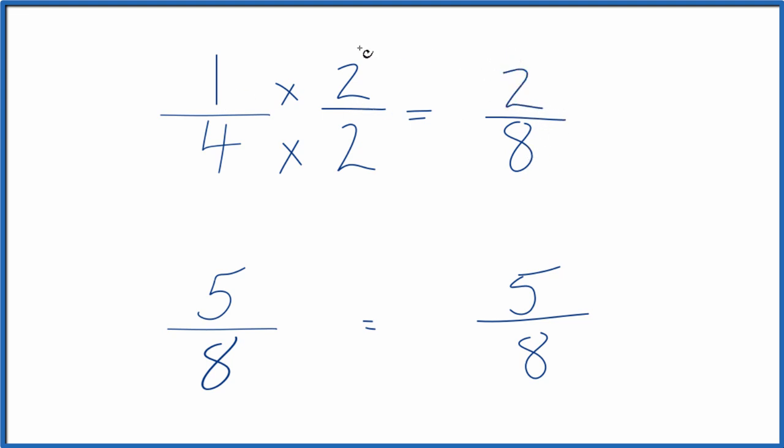Two-eighths is an equivalent fraction to one-fourth. They're both equal to 0.25. But now we have the same denominator, we can compare the numerators and find our answer.